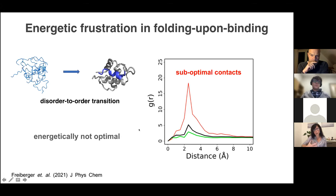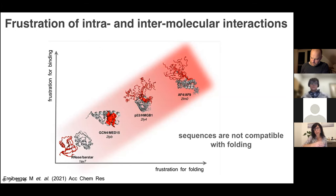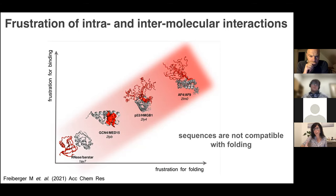In general, frustration for folding relates to frustration during binding. Sequences that can fold have very low degrees of frustration upon binding, but sequences that don't want to fold also exhibit a high degree of frustration upon binding. So sequences not compatible with folding won't be compatible with folding upon binding either, or they fold but won't be energetically optimized.